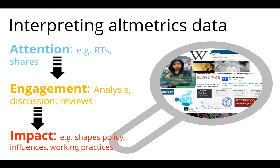Interpreting the altmetric data: it's about things like retweets and shares — the attention it gets — but then also the engagement, the discussion, the reviews, and then the impact, such as what is shaping policy, what it is influencing. If a piece of research you wrote in 2010 suddenly appears in a policy document in 2016, has that helped shape that policy? In the past you would not have known it had been used unless you were specifically searching in those areas. Altmetrics brings that attention out into the open.